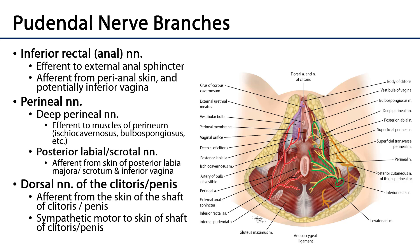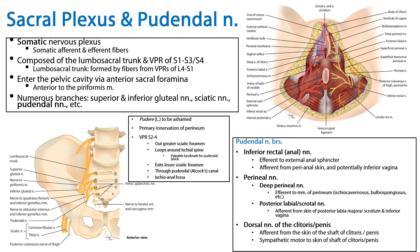There is also a dorsal nerve of the clitoris or penis, heading deep, serving the skin of the shaft of the clitoris or penis and the superficial tissues about that area. It's going to be involved with respect to sexual response and will be sympathetic motor or vasomotor to the skin of the shaft of the clitoris or penis. We've discussed the sacral somatic plexus as well as its constituents and specifically the pudendal nerve and its targets within the perineum.